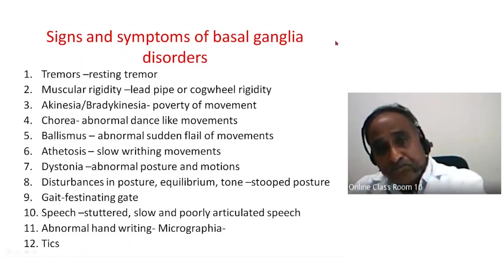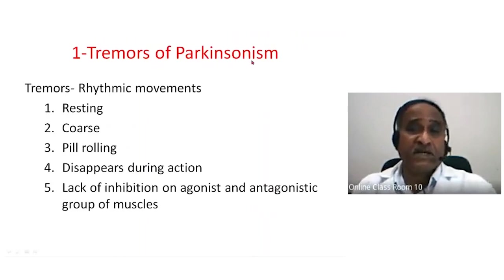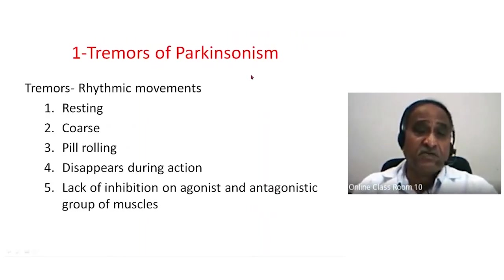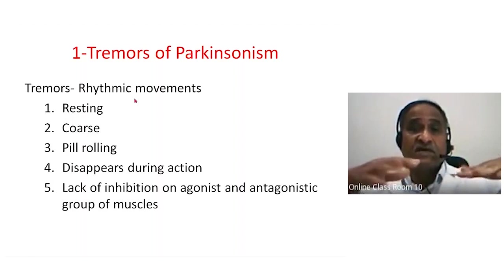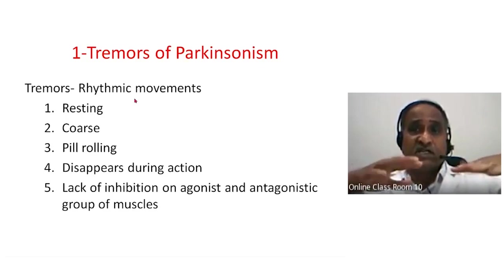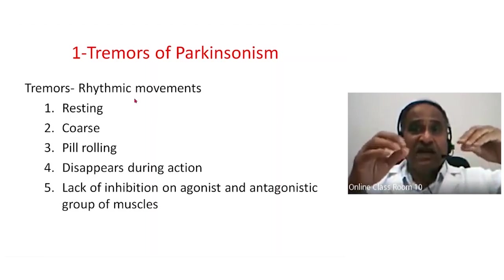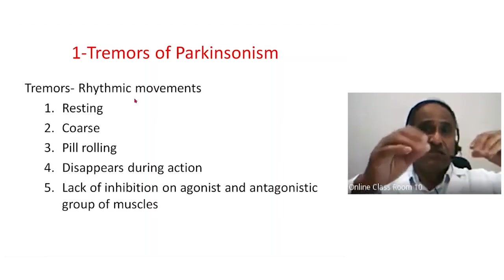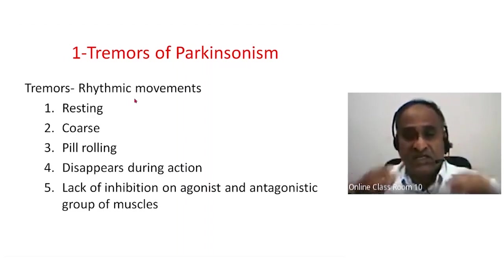Now examining each sign in detail: the tremors of parkinsonism are rhythmic movements that appear when the person is at rest — coarse, resting tremors. They can be seen as a 'pill-rolling' motion between the hands — even when the hand is kept at the side, there is a continuous pill-rolling motion.